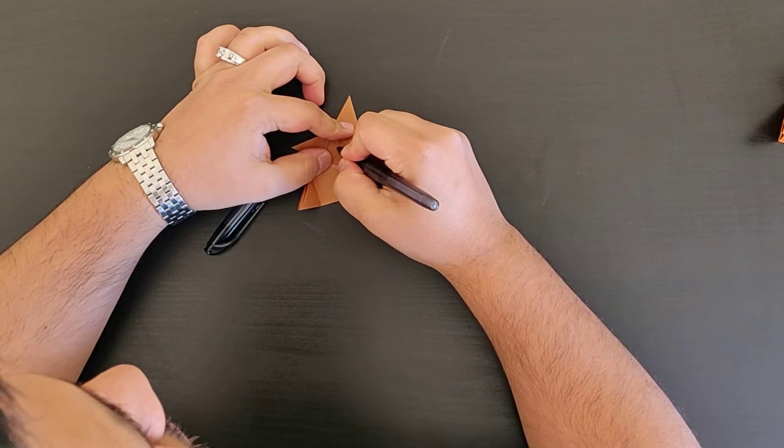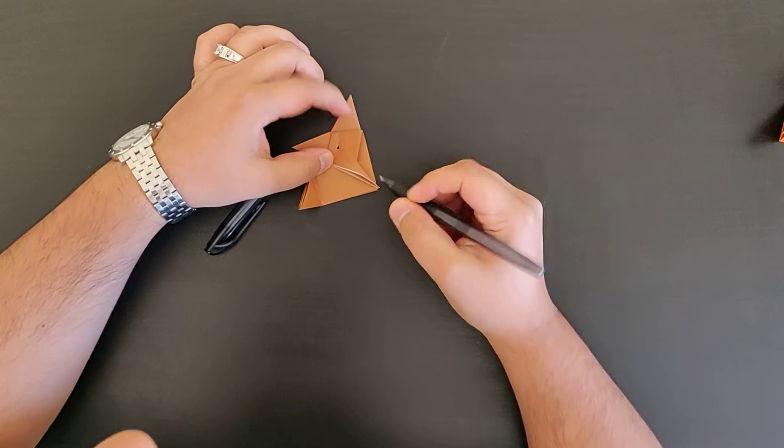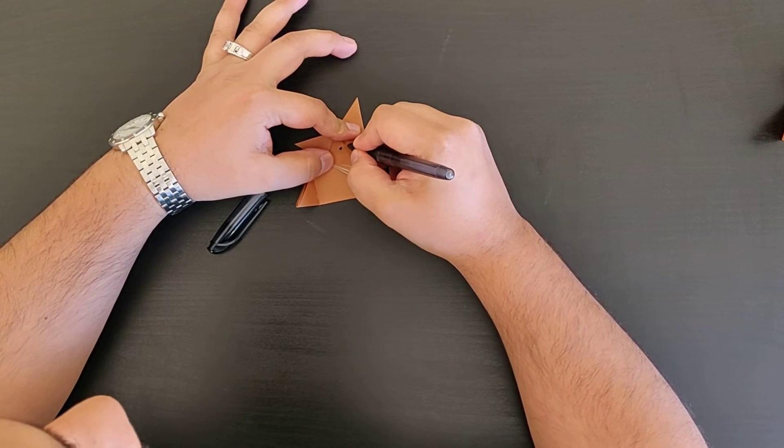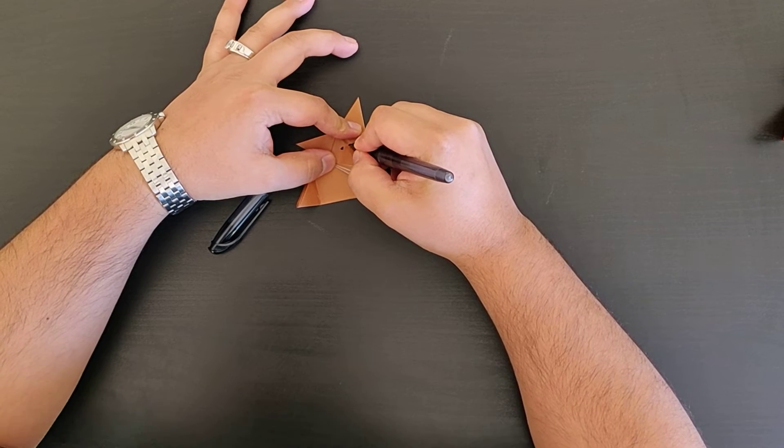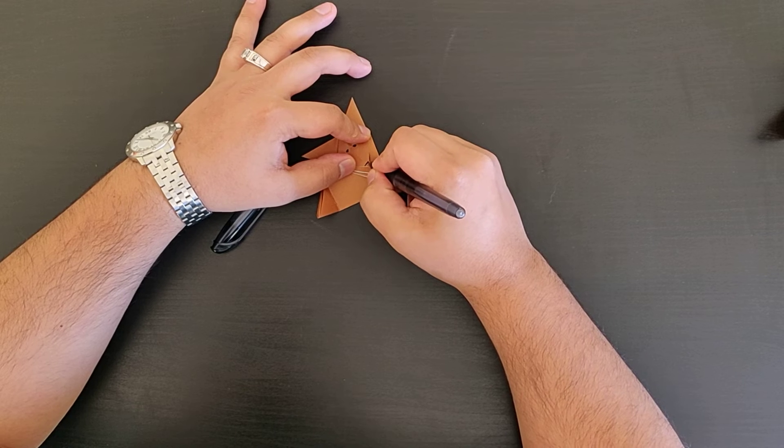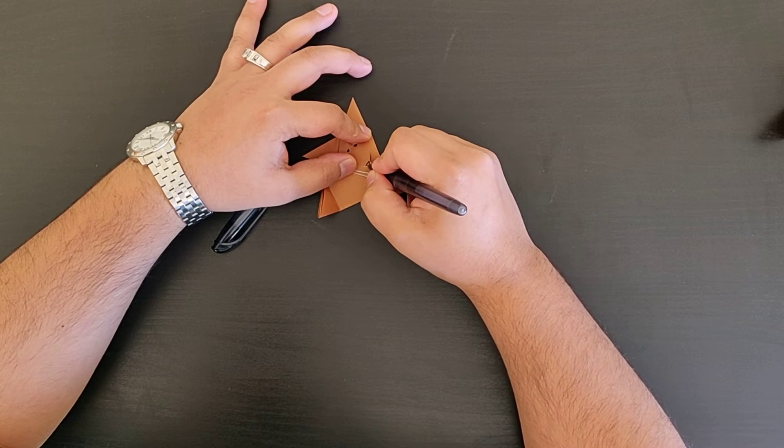And then all we need is a head. Draw on some eyes. Good stuff. A good thing here is we've got that fold in the middle so we can try and make it as symmetrical as possible. Give it a filled out nose.